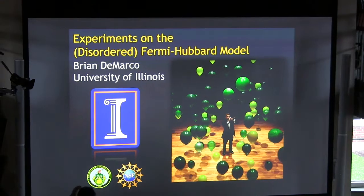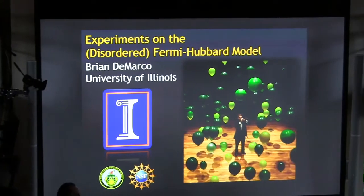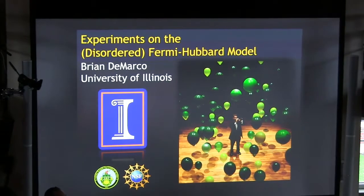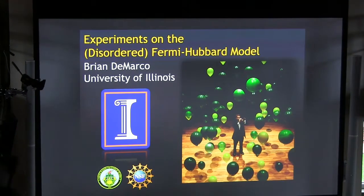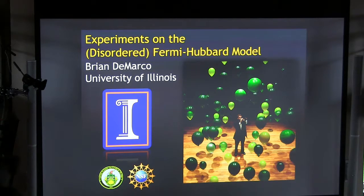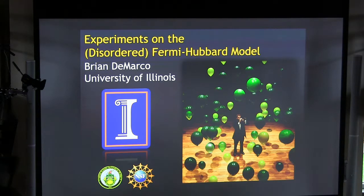I decided to give a little bit of an overview talk knitting together many of the results we've had over the last five years or so on the disorder from the Hubbard model 3D in cubic lattices. And what I'll do is at the end add in some new measurements which we still don't know quite how to interpret, and we're very interested in getting feedback about that measurement and how we should even think about it. What's a good framework for understanding it?